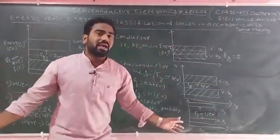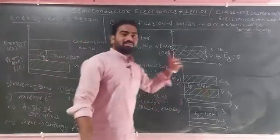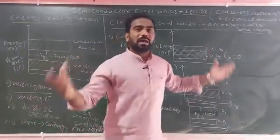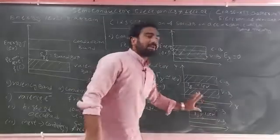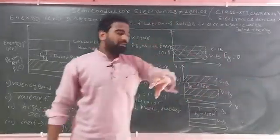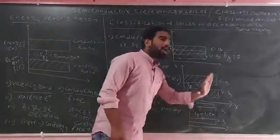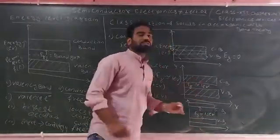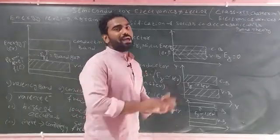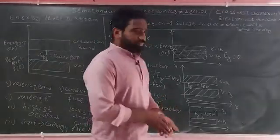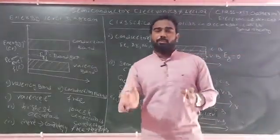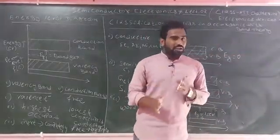For insulators, the band gap is so high that even the amount of electricity applied cannot cause electrons to jump from the valence band to the conduction band. So current does not flow. If you have short notes, then study the energy band: the range of energy possessed by the electrons in a solid is known as the energy band.